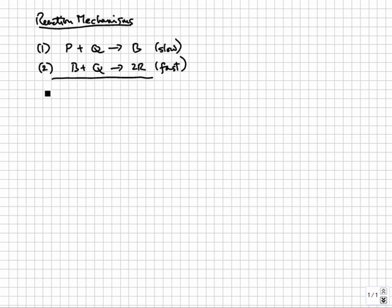Before we look at the mechanism further, let's determine the overall reaction first. If you add up everything on the left and right sides of all the steps and cancel the duplicate species, you should get the overall reaction. For this example, it is P plus 2Q going to 2R.